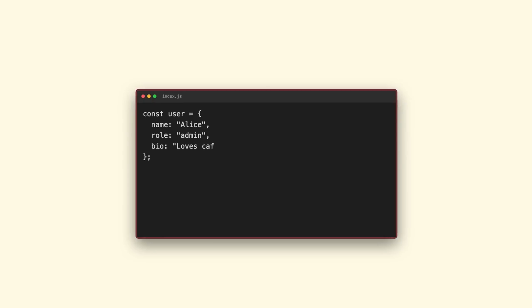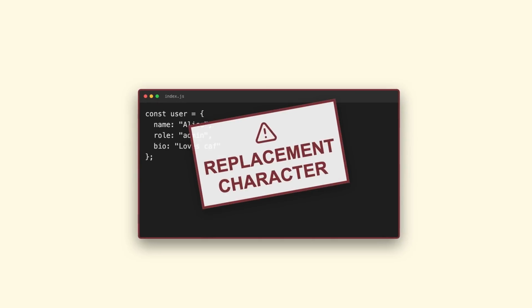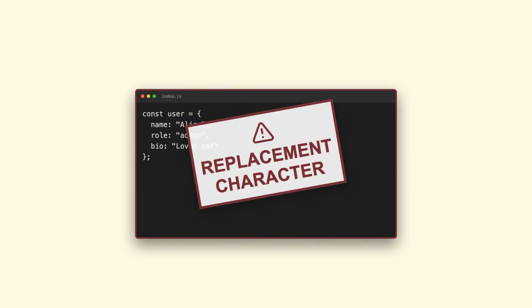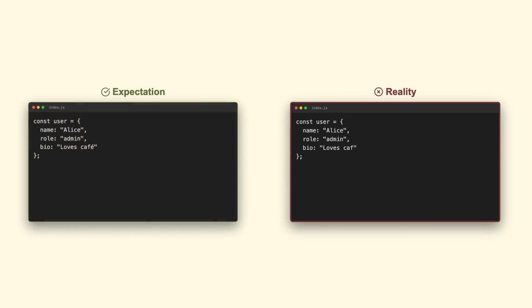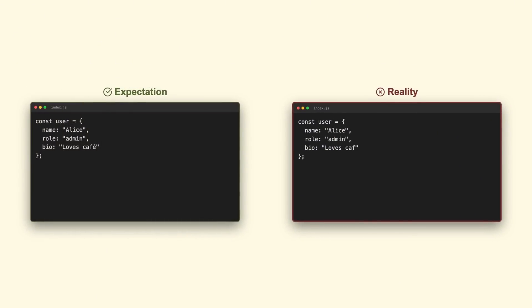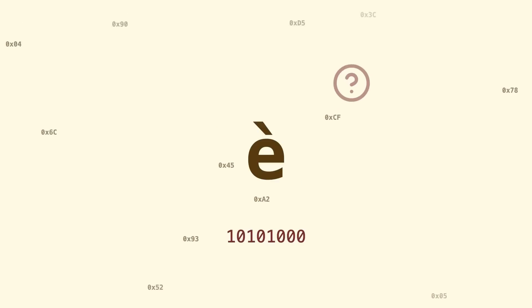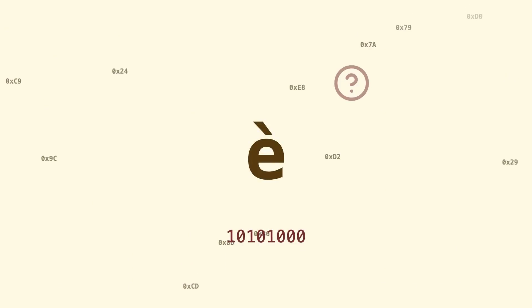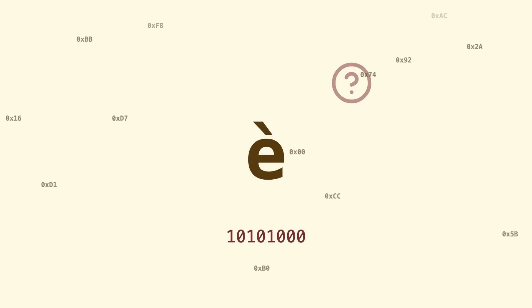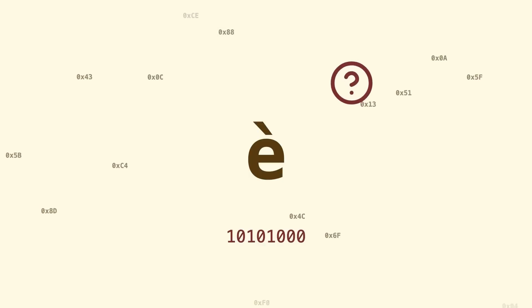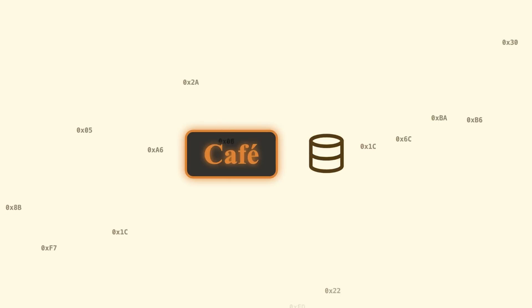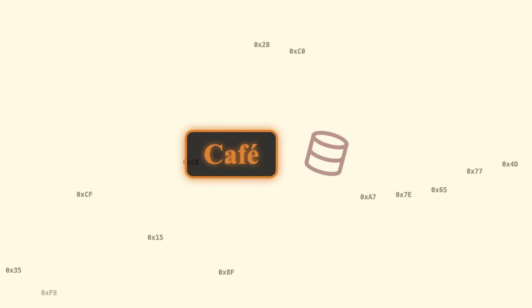Ever seen this character, or wondered why your perfectly good code breaks when someone types an emoji? You're about to understand character encoding better than most developers. We all know computers only speak numbers. When you type A, your computer stores the number 65. But what about other characters — what number is that, and who decides? This is where things get messy, and why that innocent-looking café sign can crash your entire database.